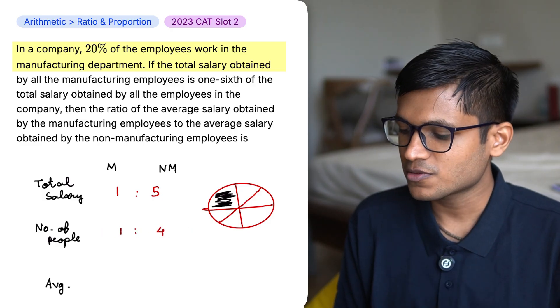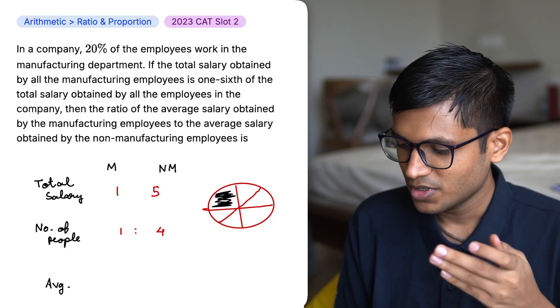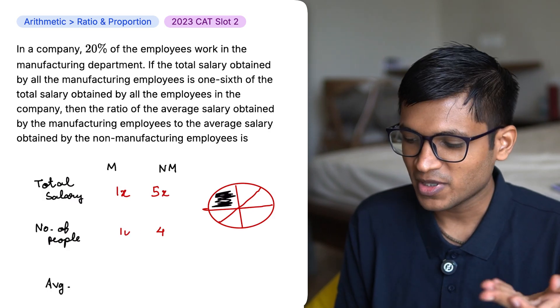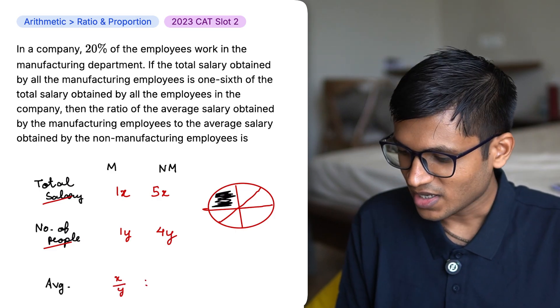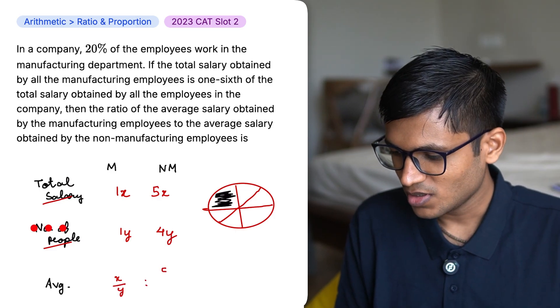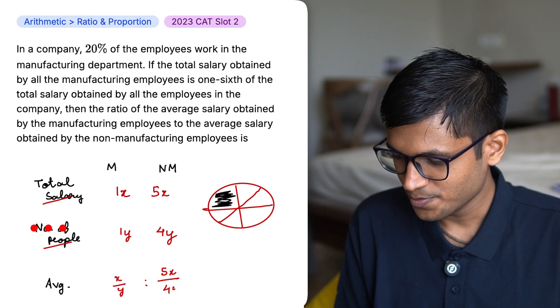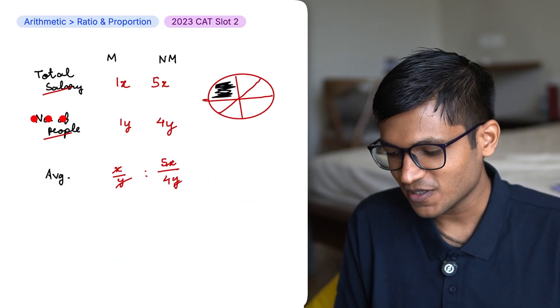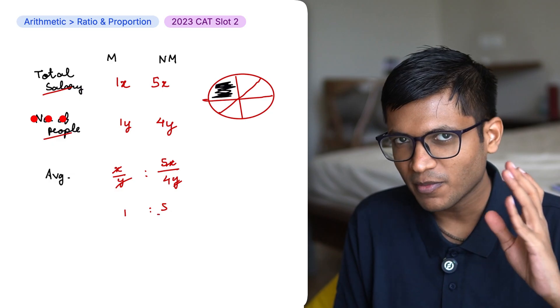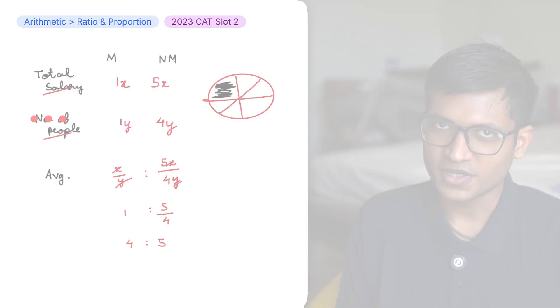Now we can convert both these ratios into an equation. So for salary, I have 1x, 5x. Number of people, I have 1y, 4y. To find the average, I just divide it. I have x by y is to 5x by 4y. I can cancel x and y on both the sides and I end up with 1 is to 5 by 4. If I multiply both the sides by 4, I have 4 is to 5.